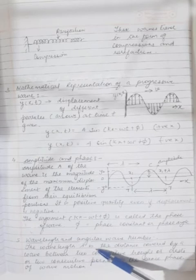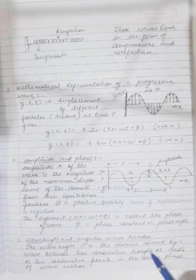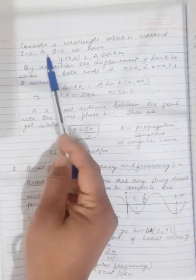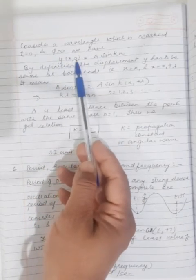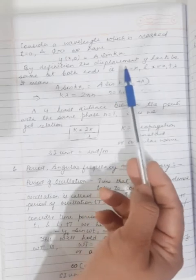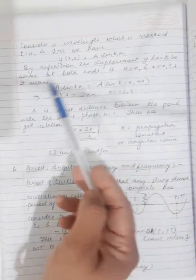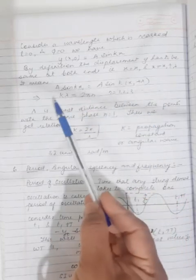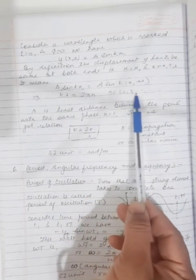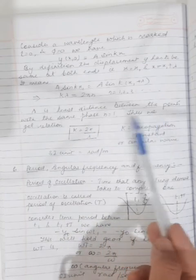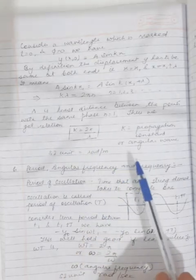Next is wavelength and angular wave number. The wavelength λ is the distance covered by a wave between two consecutive troughs or crests, or two consecutive points in the same phase of the wave motion. At t = 0 and φ = 0, we have y(x, 0) = A sin(kx). By definition, the displacement y must be the same at x₁ and x₁ + λ, giving k·λ = 2πn. Since λ is the least distance between points with the same phase, n = 1, so k = 2π/λ, where k is the propagation constant with SI unit radians per meter.